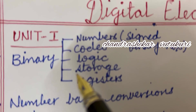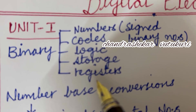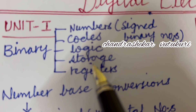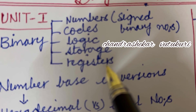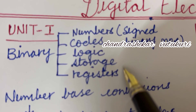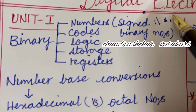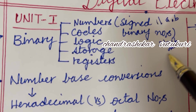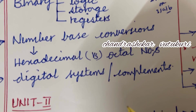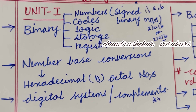The first unit is all about binary numbers, binary codes, binary logic, storage, and registers. You need to work out all these concepts. Signed binary numbers also need to be prepared. To score full marks in Unit 1 — which covers question numbers 1a, 1b, 2ab, or 3ab — number-based conversions related to hexadecimal versus octal numbers, digital systems, and complements are important short and long questions.